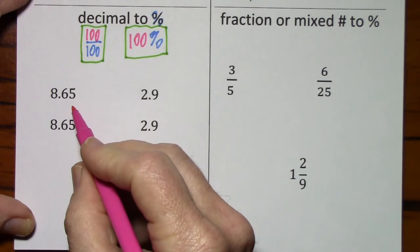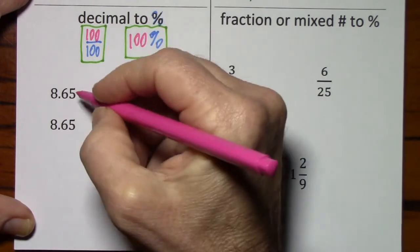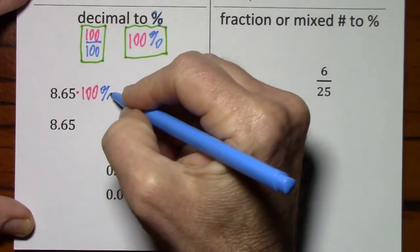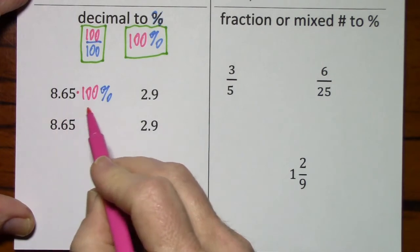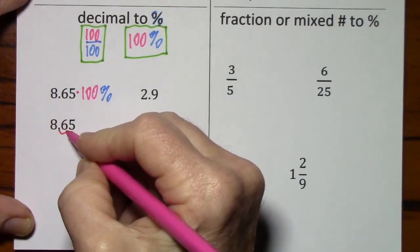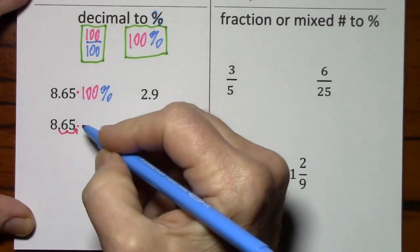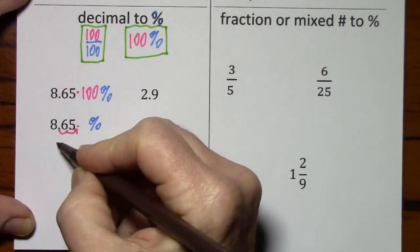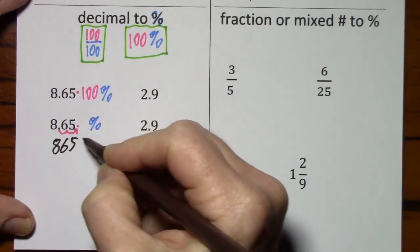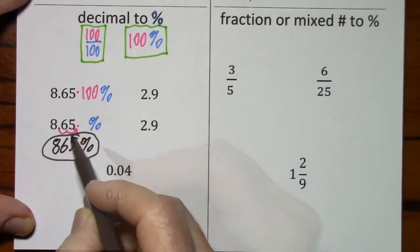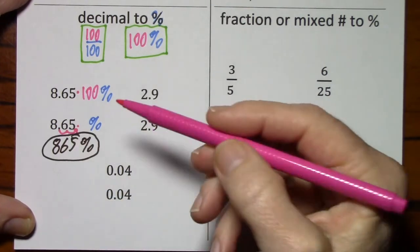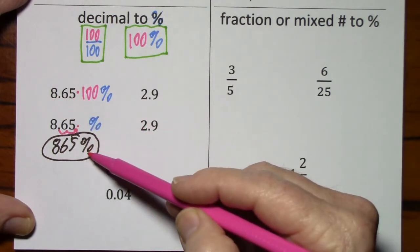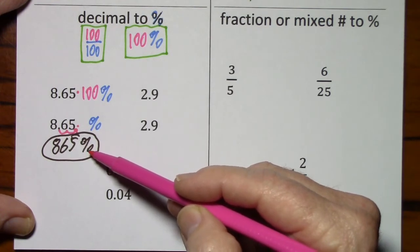So if I have this value and I want to write it with a percent sign, I can say times 100%. And with decimals, when you multiply by 100, you simply move the decimal two places. The percent sign is still sitting here. So you end up with 865%. It's important to realize 8 and 65 hundredths is the same value as 865%. They just look different.